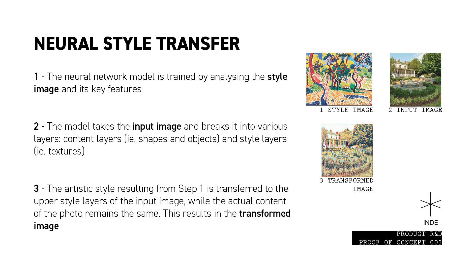Finally, the transformation occurs. The artistic style determined by step one is transferred to only the upper layers of the input image, while the deeper content layers remain unchanged. This results in a photo containing the same objects and shapes but looking to have been repainted by the hands of one of the greats.